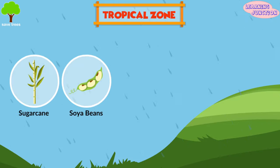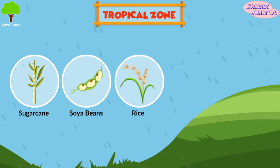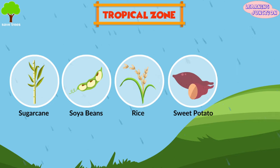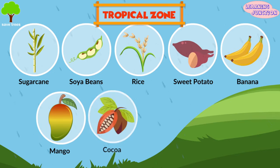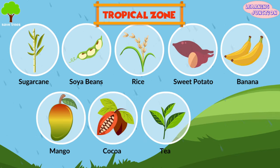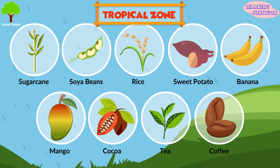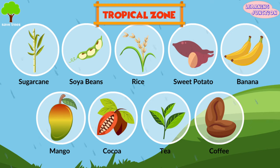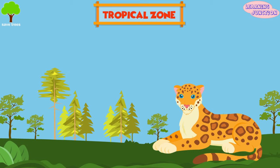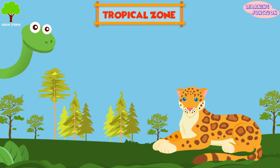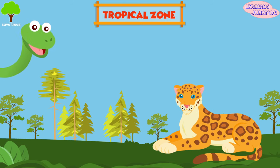Sugarcane, soybeans, rice, sweet potatoes, bananas, mangoes, cocoa, tea and coffee are grown in this zone. The climate of the tropical zone is perfect for animals like jaguars and anaconda.